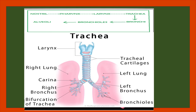Since there is a pair of lungs, the two bronchi each enter one lung, dividing further into many branches called bronchioles. The bronchioles end in small sacs called alveoli.